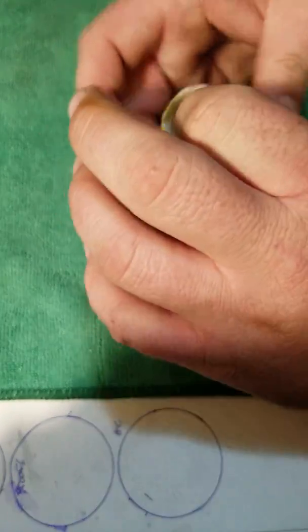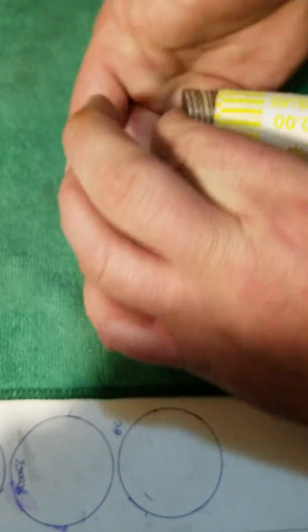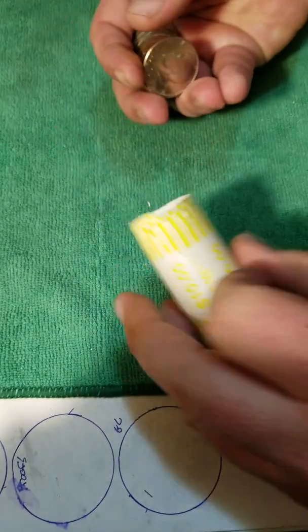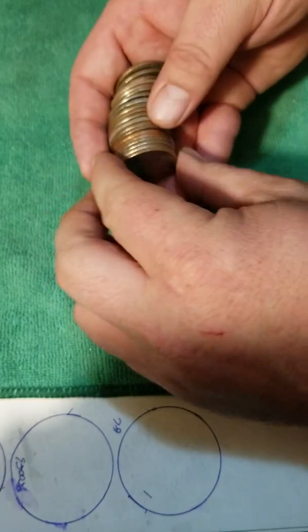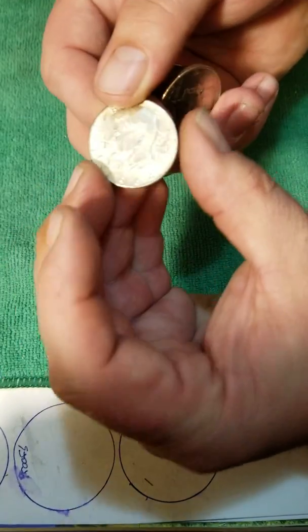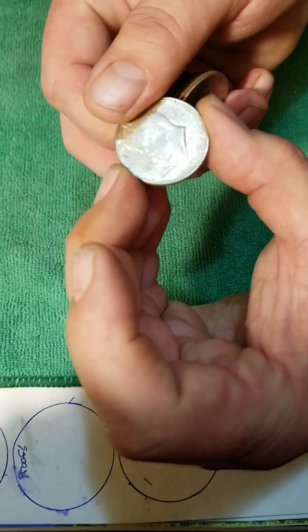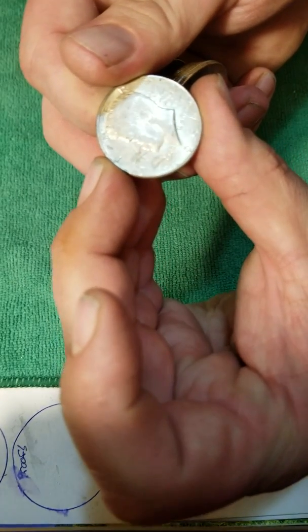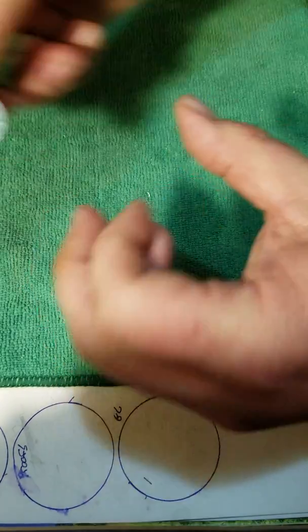All right guys, this is that roll that I already opened to show you guys what's in it. I told you there was three silvers and we've got a '64 all scratched up, wrote on, but it's silver.